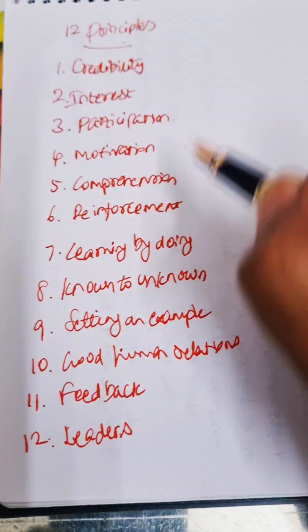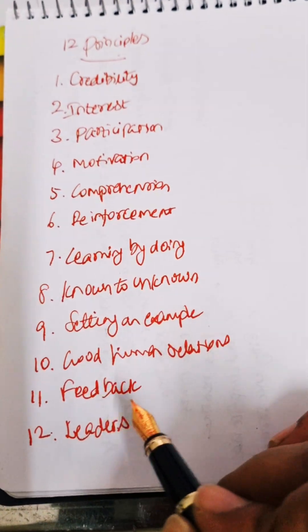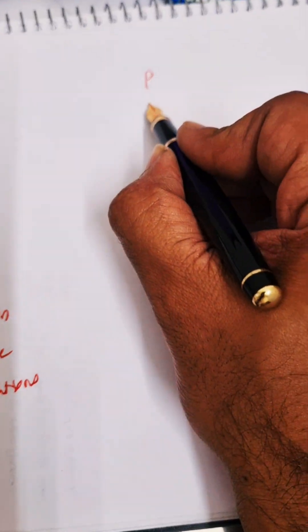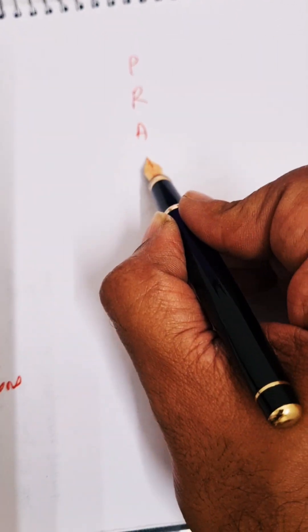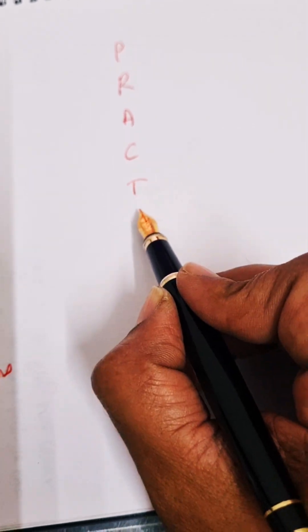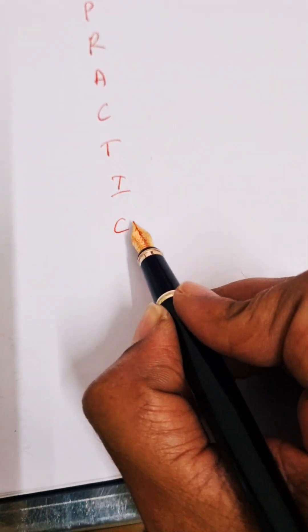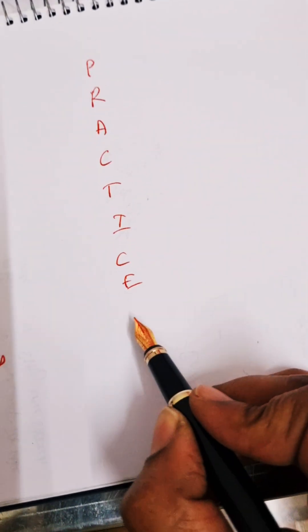Now we are going to remember these 12 principles by using this mnemonic called P-R-A-C-T-I-C-E G-O-L-F, practice golf, very easy to remember.